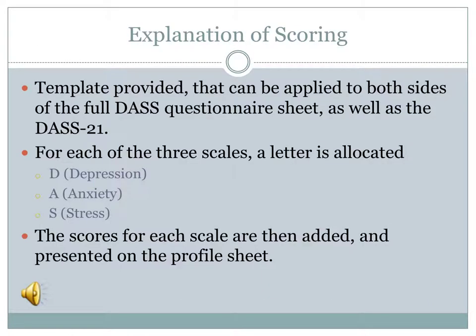A scoring template provided with the DASS can be applied to both sides of the full DASS questionnaire sheet as well as the DASS-21 questionnaire. For each of the three scales — depression, anxiety, and stress — a letter is allocated: D for depression, A for anxiety, S for stress. The scores for each scale are then added and presented on the profile sheet as shown in the video.